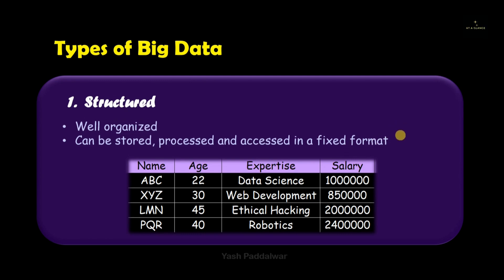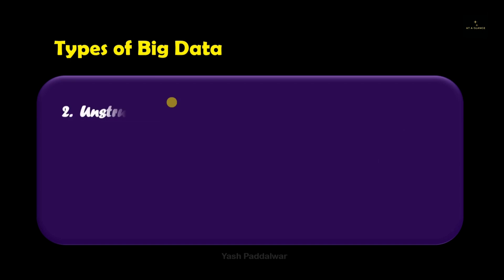So this is structured big data which is always easy to analyze, process, and store. Now let's have a look at another type of big data which is totally opposite of the structured big data. It is nothing but unstructured big data. You can see that it lacks a specific format and structure for storage and handling.